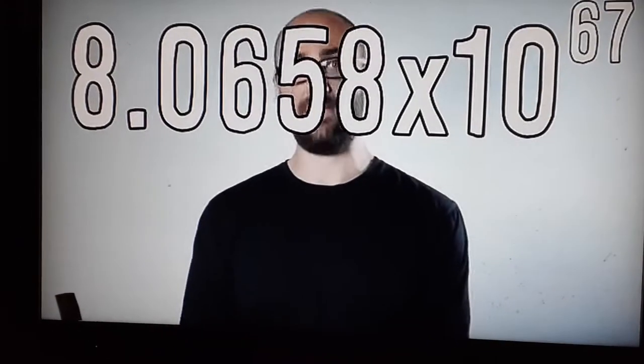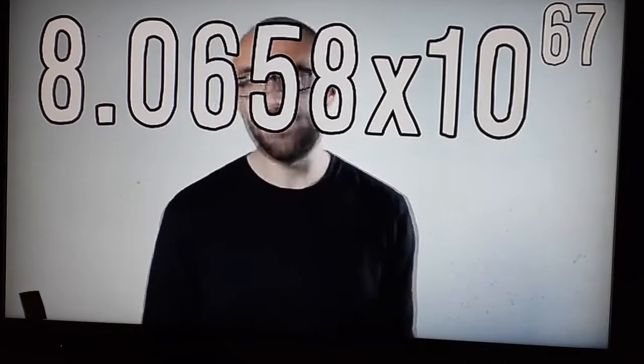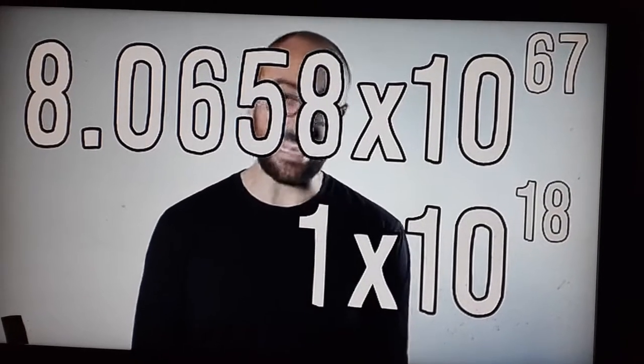This is because 52 factorial is 8.0658 times 10 to the 67th. In comparison, the observable universe is only about 10 to the 18th seconds old. Even if you had been properly shuffling a deck every single second since the universe began 13.7 billion years ago, you still, to this day, wouldn't have even come close to assembling every arrangement possible.